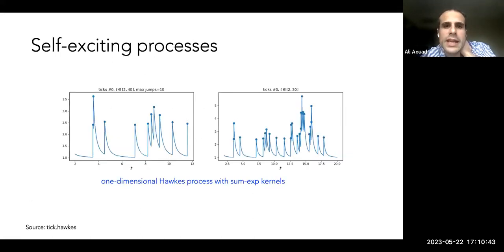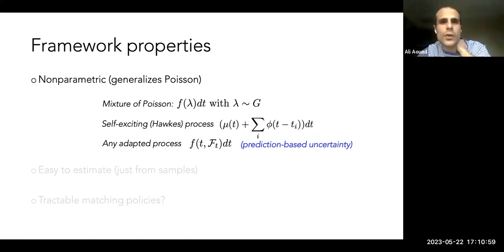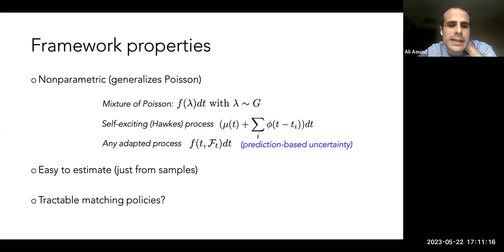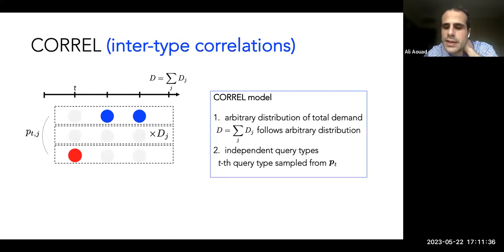Another model covers inter-type correlation — a common factor. Perhaps there's a holiday effect, like Halloween driving pumpkin demand from every region simultaneously. In this model, we first sample the total demand D from any arbitrary distribution, then sample the type of each consumer independently from a known probability vector B_T conditional on the total count. We don't know total demand, but can predict the proportion of marginal customers. We have results for both model types.